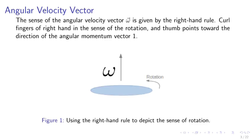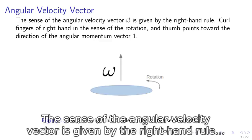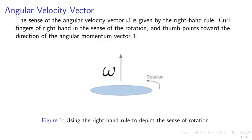Angular velocity vector. The sense of the angular velocity vector omega is given by the right-hand rule. Curl the fingers of the right hand in the sense of the rotation. The thumb points toward the direction of the angular momentum vector, as shown in Figure 1.